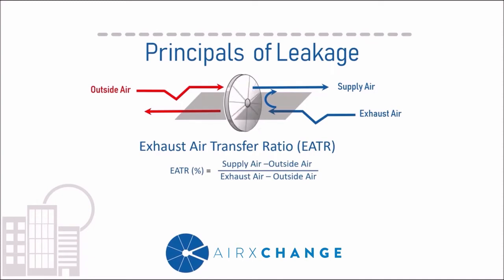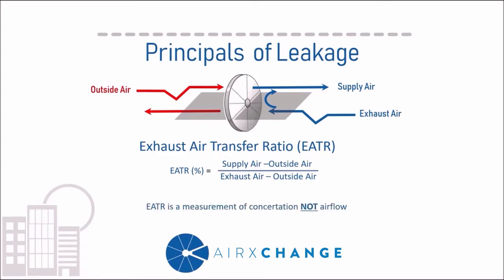EATR is a value represented by a percentage. When this value is determined during testing, it's determined by measuring the concentration of a tracer gas at three points of delivery. EATR is a measurement of concentration, not an airflow measurement. By using a concentration, it allows you to measure and calculate a value that is independent of material and process — meaning the value is based upon all influences that would encourage a component of the exhaust air to be delivered into the supply air.